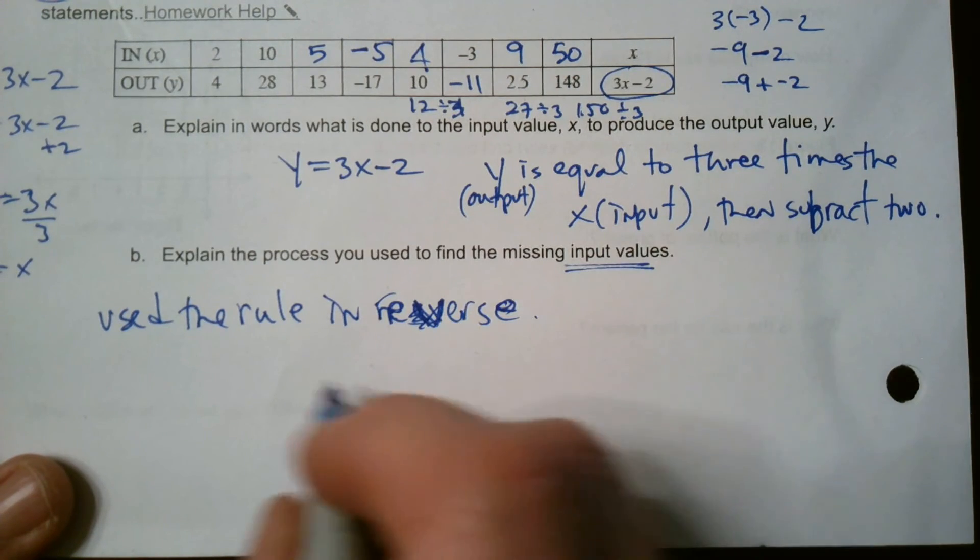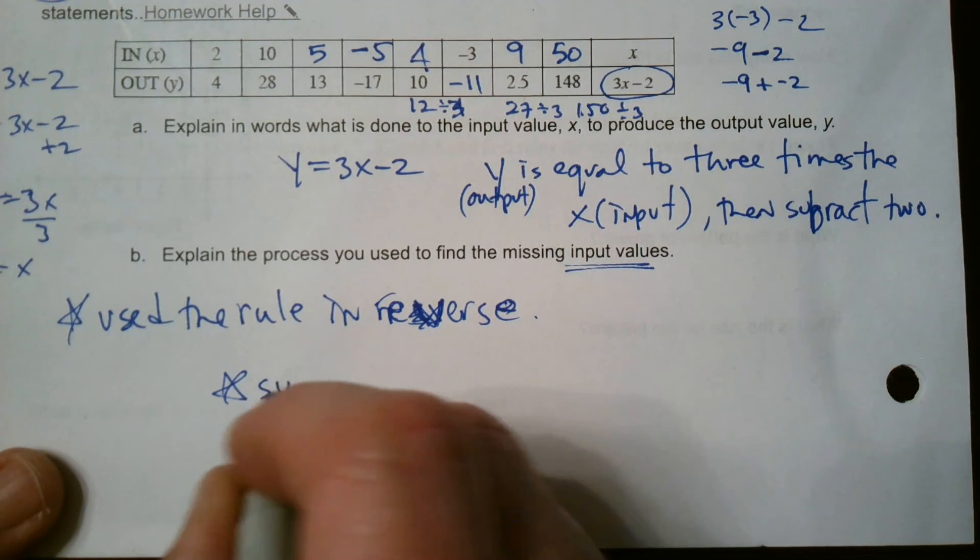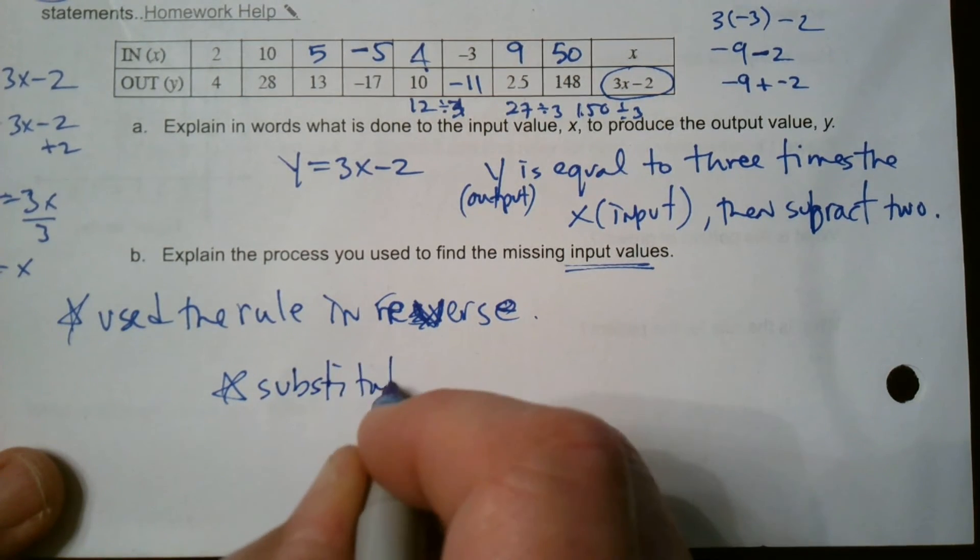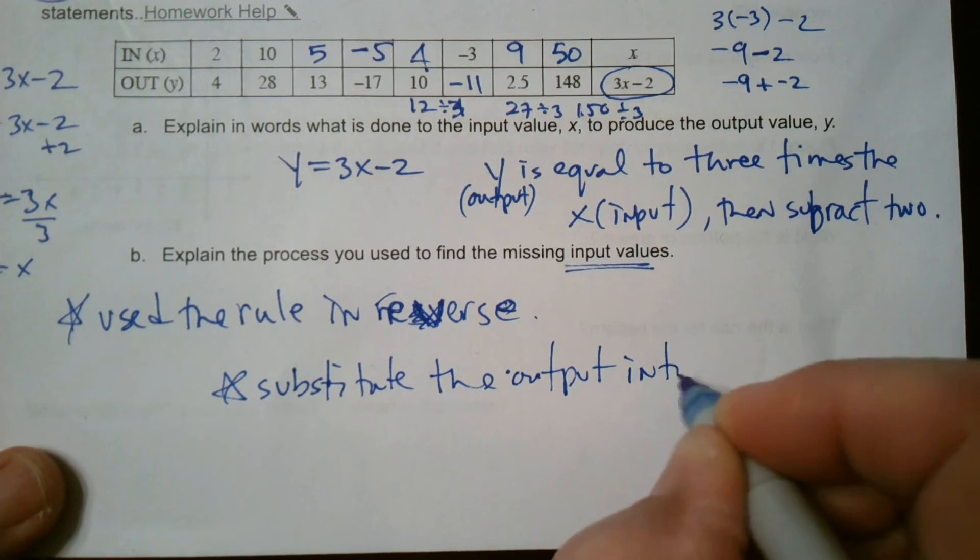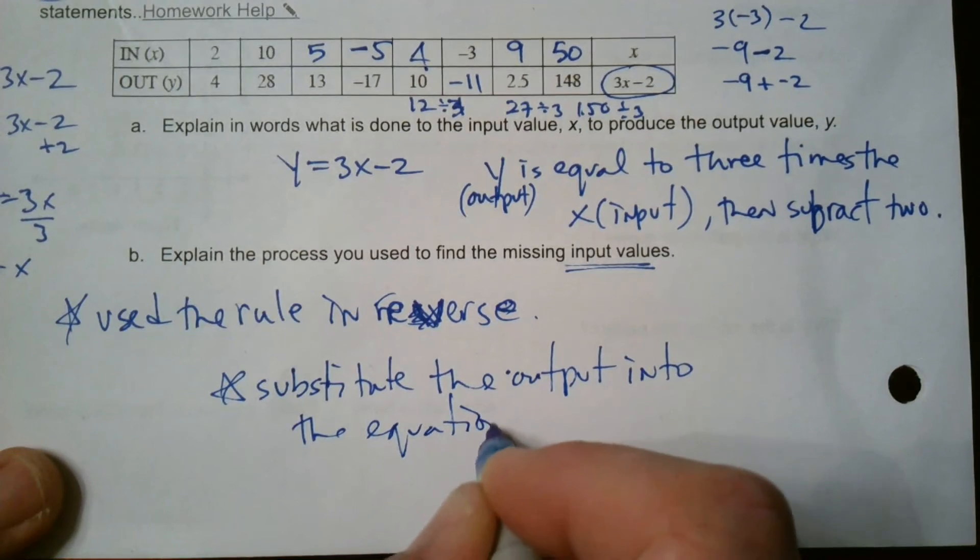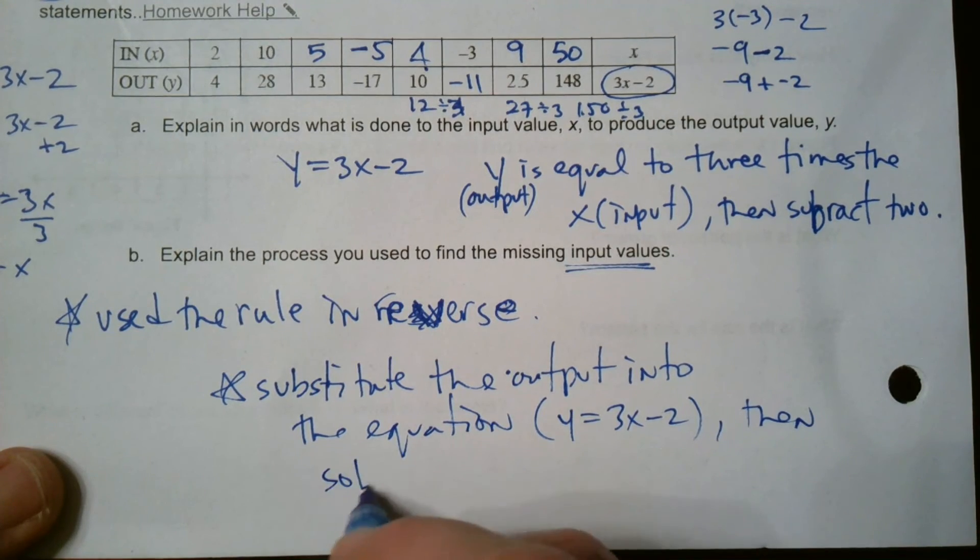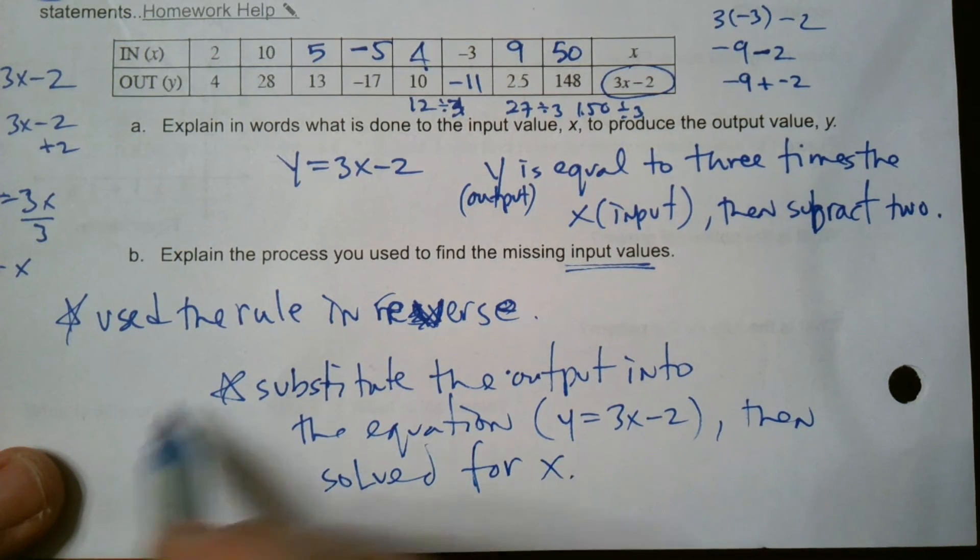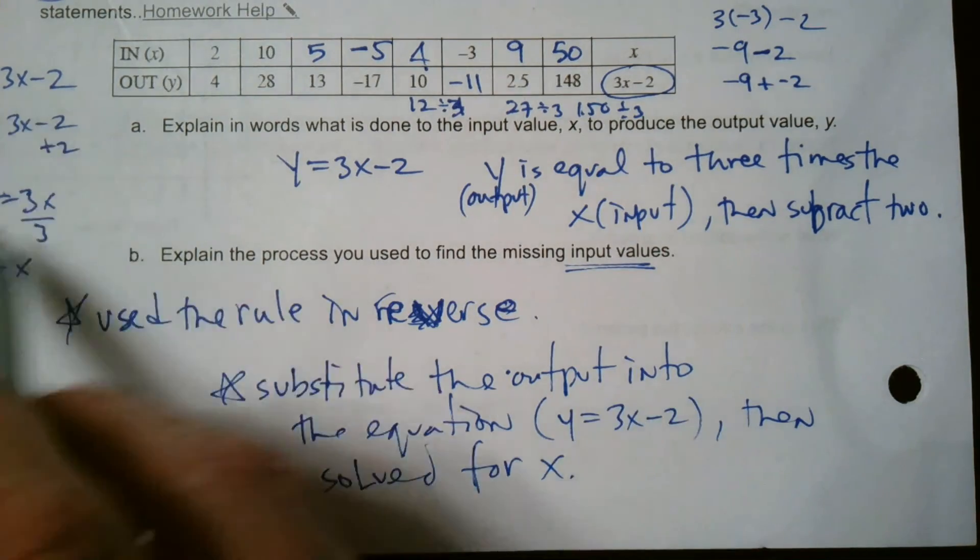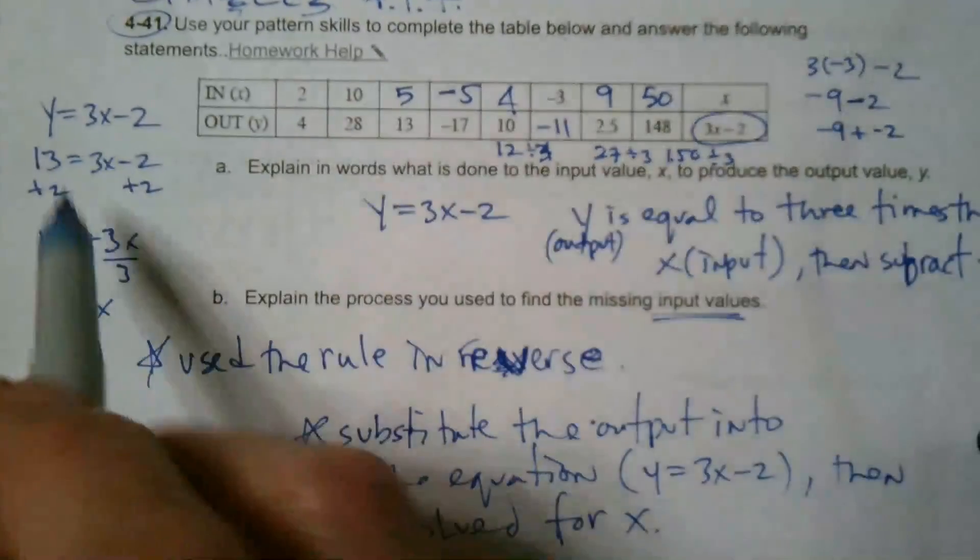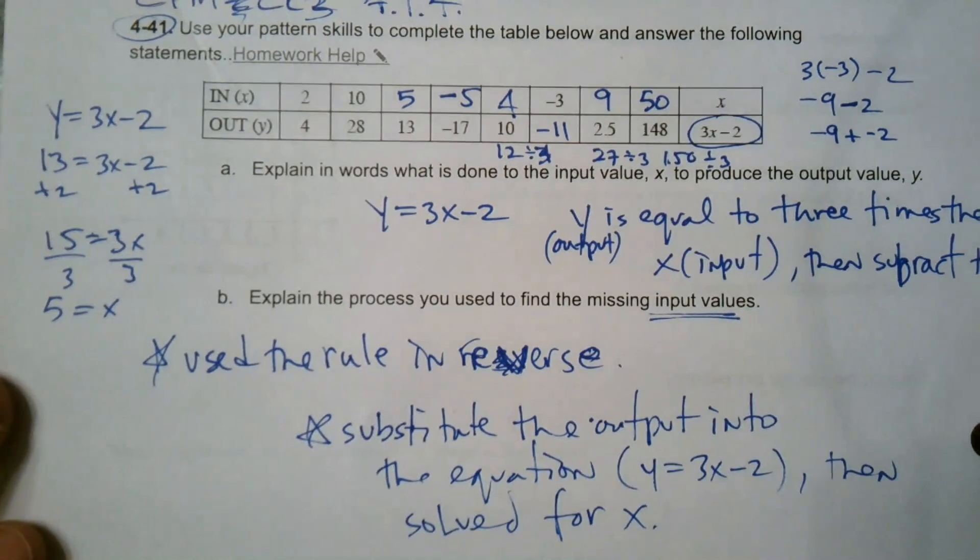So use the rule in reverse is what we did. Or, that was one thing we did, use the rule in reverse. The other thing we did was to substitute the output into the equation, and the equation was Y is equal to 3X minus 2. Then solve for X. So a couple of ways you could say, use the rule in reverse, or substitute the output. That's what we did over here. Substitute the output. Substitute the output into the equation. We substitute the output in the equation and then solve for X. So either way you look at it. Okay. There you go.